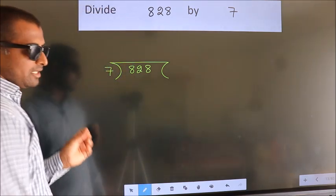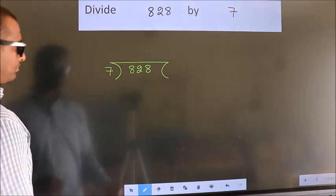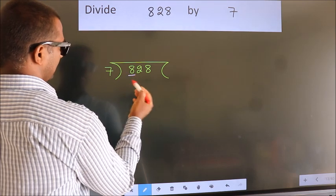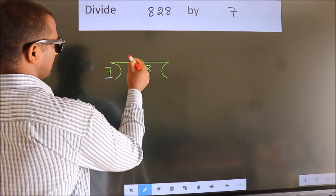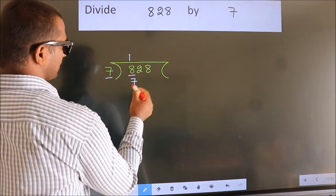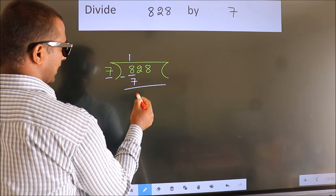This is your step 1. Next, here we have 8, here 7. A number close to 8 in 7 table is 7 once 7. Now we should subtract. We get 1.